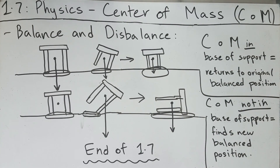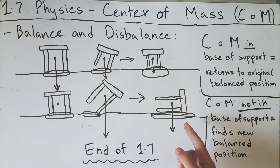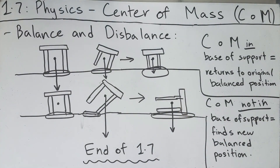And this is it for section 1.7. I hope you now understand the concepts of center of mass, how to find the center of mass of irregular and regular objects, and how the location of the center of mass and the size of the base of support can affect the balance of an object. Please leave a comment and provide feedback so I can improve my videos in the future. I'll see you in the next video — thanks for watching.